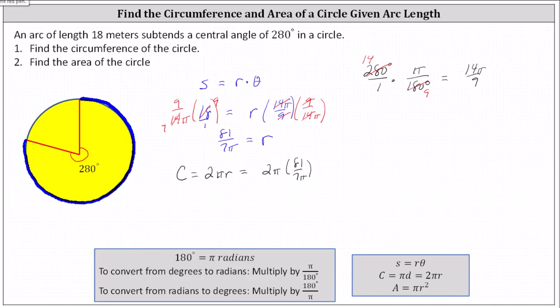Simplifying before multiplying, pi divided by pi simplifies to one. Nothing else simplifies. The circumference is equal to two times 81 divided by seven, which is 162 divided by seven.